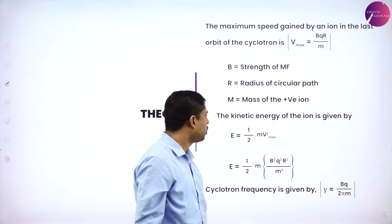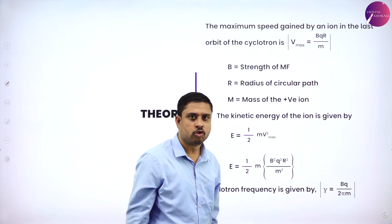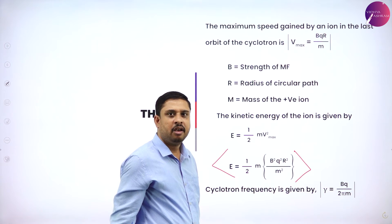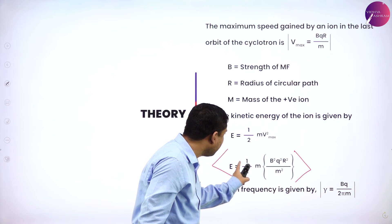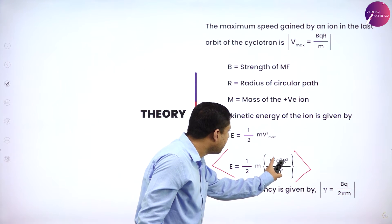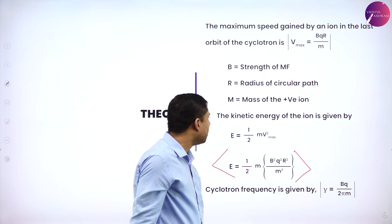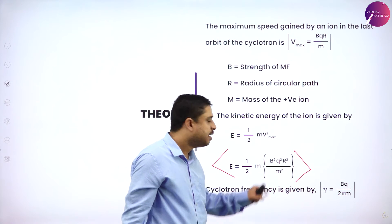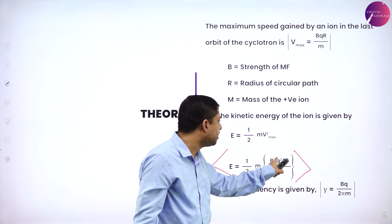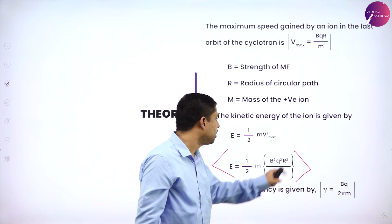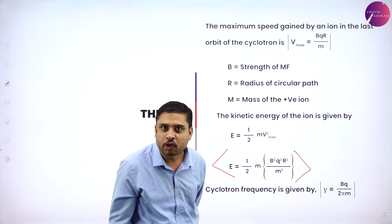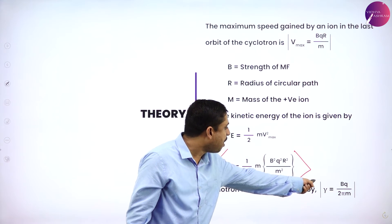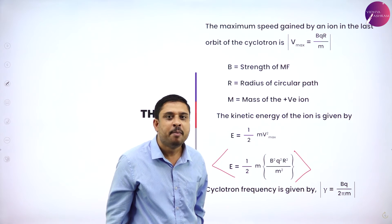Coming to the theory of the cyclotron, what is important is the energy of the cyclotron. The energy of the cyclotron is given by: E = (1/2) × m × B² × q² × r² / m², where m is the mass of the charged particle, B is the strength of the magnetic field, q is the magnitude of the charge, and r is the radius of the circular path. Therefore, the cyclotron frequency is given by: f = Bq / (2πm).